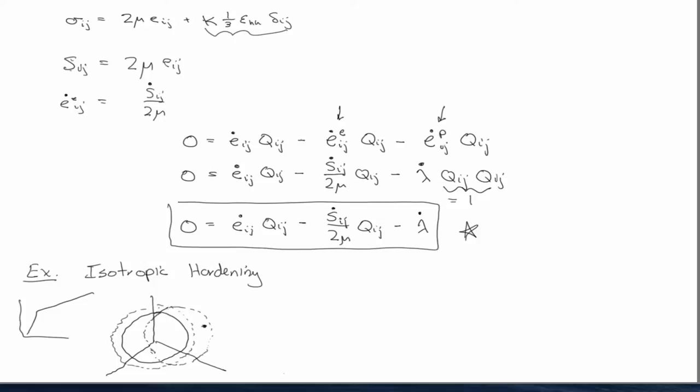And you can, of course, have combined hardening too. So the case of translation, and we're not going to cover it in any detail here. There's just not enough time to cover every possibility. But in the case of translation, the terminology is called kinematic hardening.